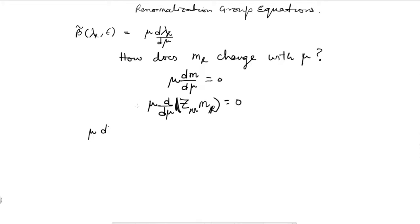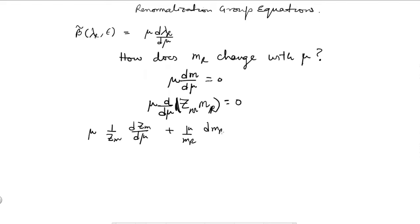Take this derivative and it should be 0, which gives you mu. After taking the derivative, I am going to divide by zm and mr. That gives you mu over zm times d_zm over d_mu, plus mu over mr times d_mr over d_mu, equal to 0.